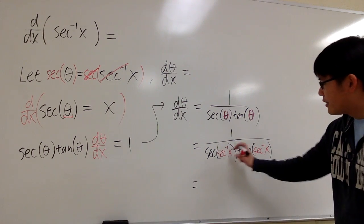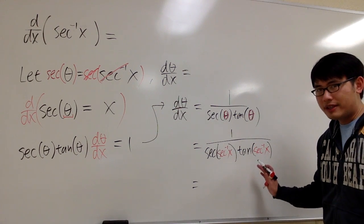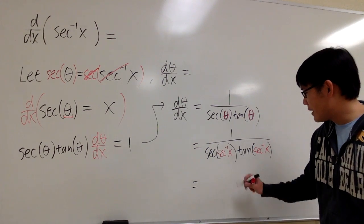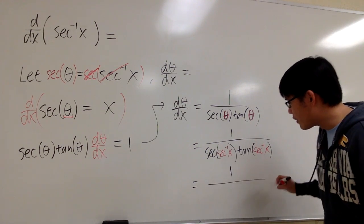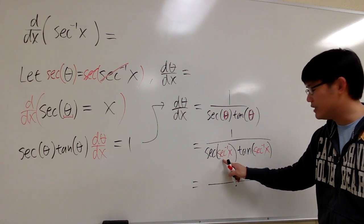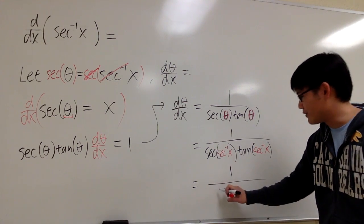Well, this right here on the denominator, we can write that as an algebraic expression. And once again, check out my other videos. I will show you how to do that. But then on the top, we have 1 over. However, this part is easy. Because secant of inverse secant, that will be just x. That's for sure.